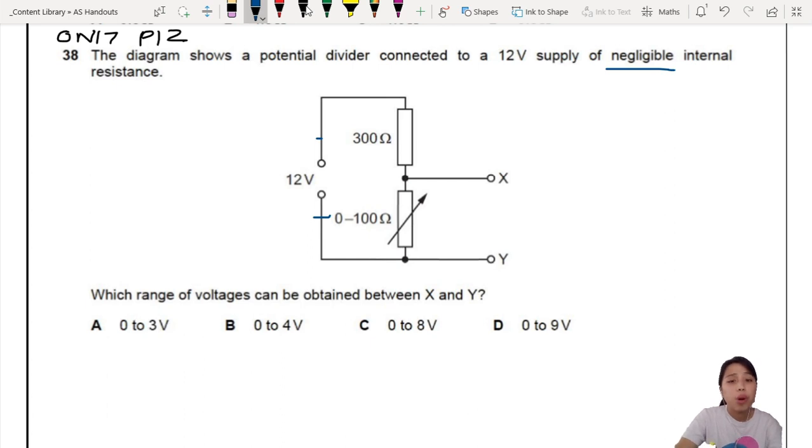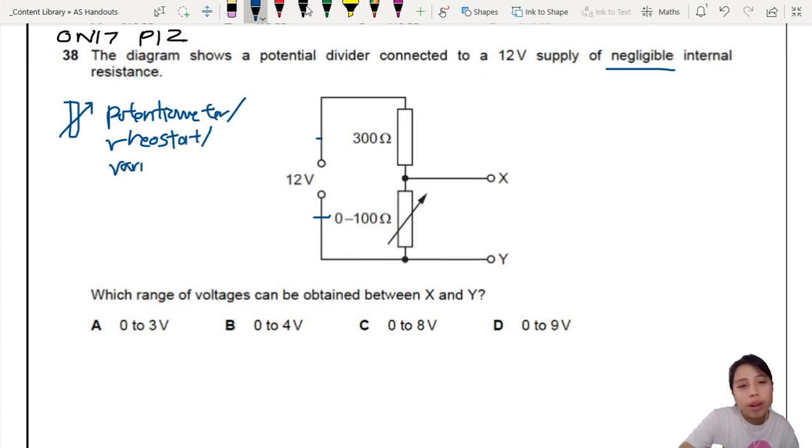What range of voltage can be obtained between X and Y? I got range of voltage. First, you need to know why this resistor got an arrow there. If it got an arrow there, means it's called a potentiometer, aka the other names are like rheostat. But the name that is most clear is it's also called a variable resistor. So it's a resistor that the resistance can change. You see, change from 0 to 100. So what range of voltage can you find here? You only want this possible range.